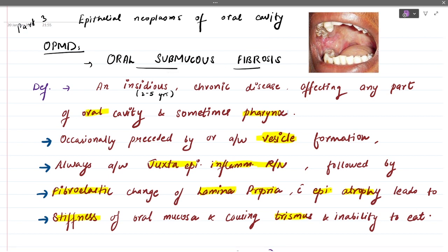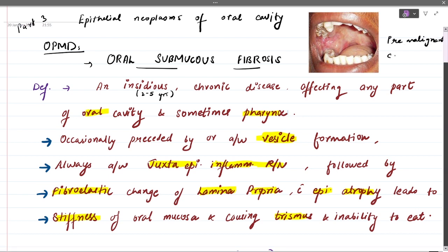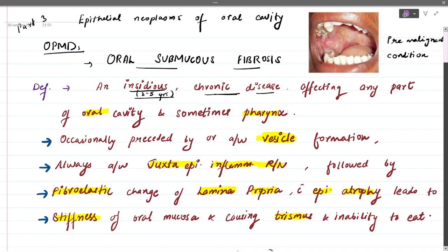Oral submucous fibrosis is very important. WHO has considered oral submucous fibrosis as a pre-malignant condition — a generalized state of the body which has a higher chance of development into a malignant condition. It is defined by WHO as an insidious chronic disease, meaning slow onset and longer duration.